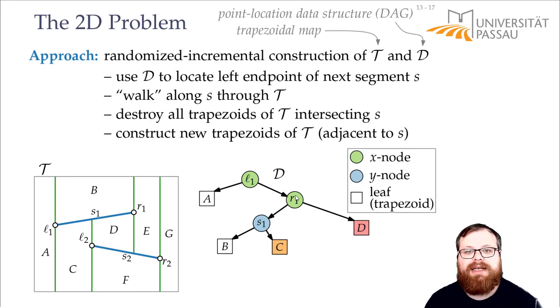How do we update the data structure? It's very similar. We just do exactly the same steps as we had here. So we had our trapezoid C, and we had our trapezoid D, and those we remove.